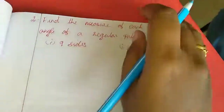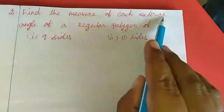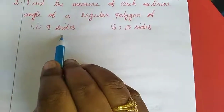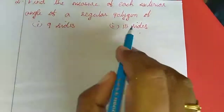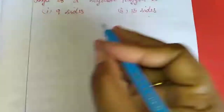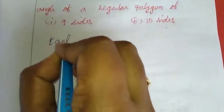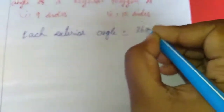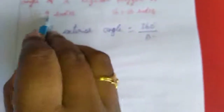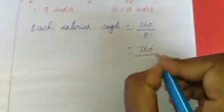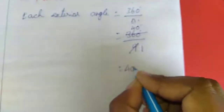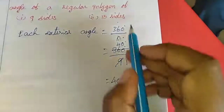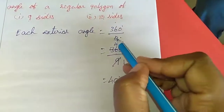Now we will move to the second sum: find the measure of each exterior angle of a regular polygon of 9 sides and 15 sides. For the first one, we use each exterior angle equal to 360 degrees divided by n, where n is number of sides. So 360 divided by 9 gives 40 degrees. For 15 sides, that is homework for you — apply the same formula with n equal to 15.